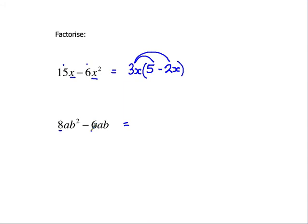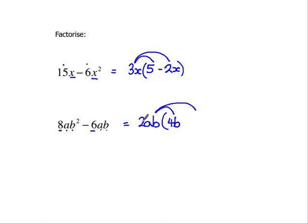Down here, we've got a number that goes into both, which is 2, and we've also got an a in both of them, so I'll take that outside the brackets. And we've also got a b in both of them, so I'll take that outside as well. So now we've got 2ab times something to give me 8ab squared — 2 times something to give 8 must be 4. I don't need to multiply the a by anything because I've already got an a. But b times something must give me b squared, so that's another lot of b. Then 2ab times something gives me minus 6ab — 2 times something to give minus 6 must be minus 3, and minus 3 times 2ab gives minus 6ab, which is what I wanted. So that's that question done.